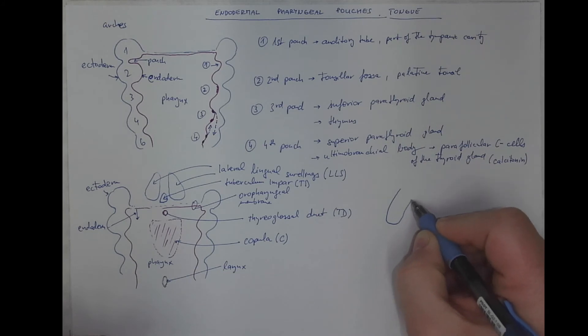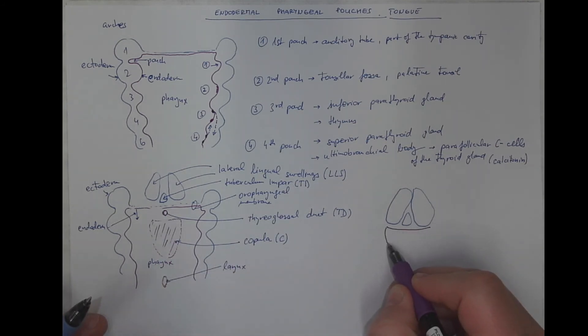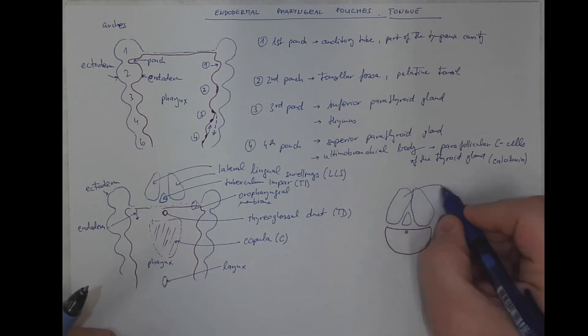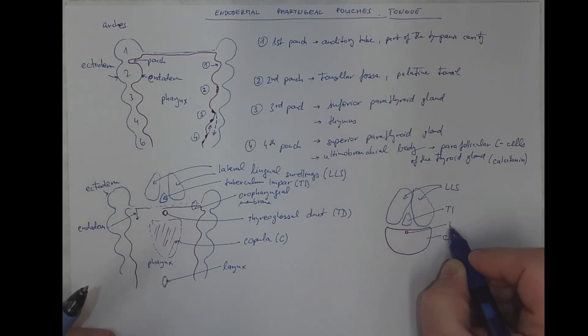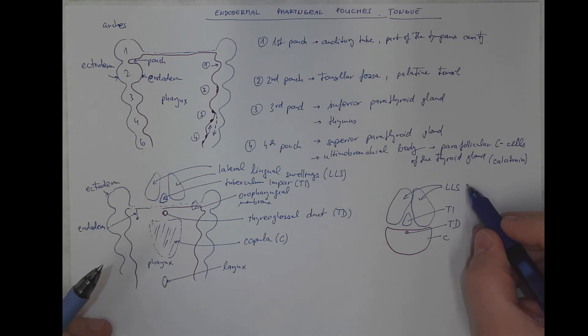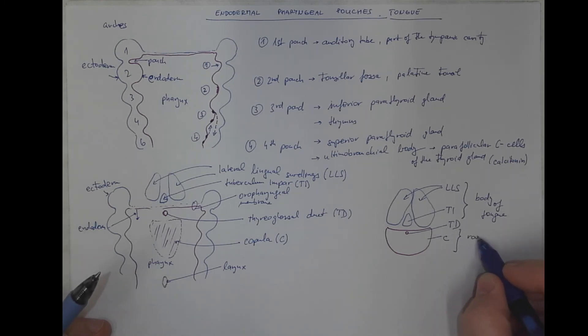Lateral lingual swellings are growing. The copula is growing. The oropharyngeal membrane disappears. Here will be the thyroglossal duct. So, the lateral lingual swellings, the tuberculum impar, the copula, and the thyroglossal duct. And the final form of the tongue will be formed from these parts. These will form the body of the tongue, while the endodermal part will form the root of the tongue.